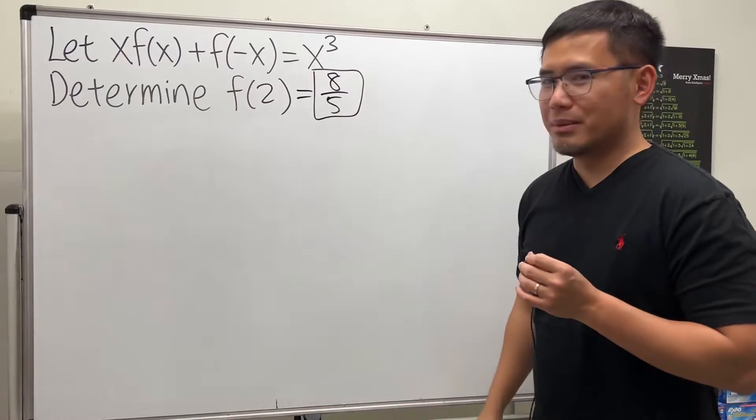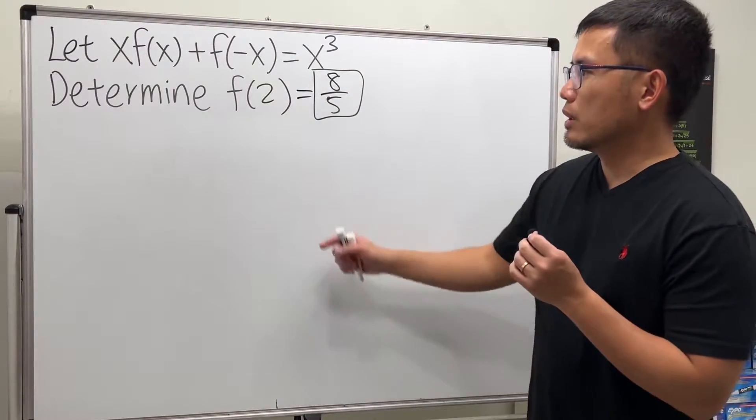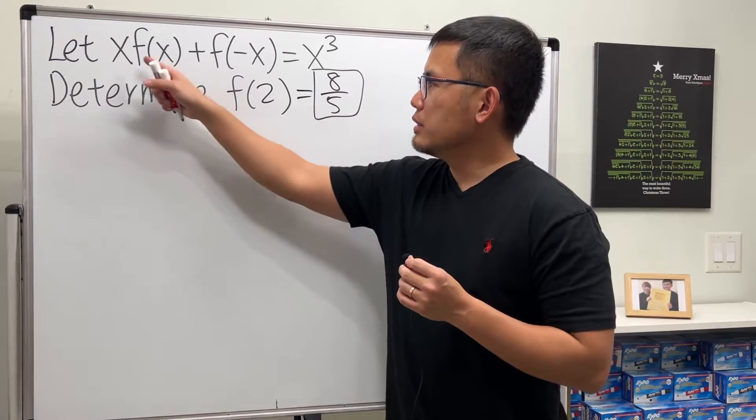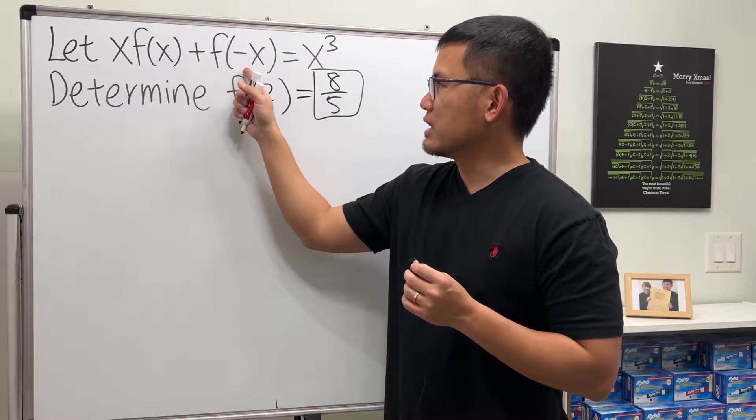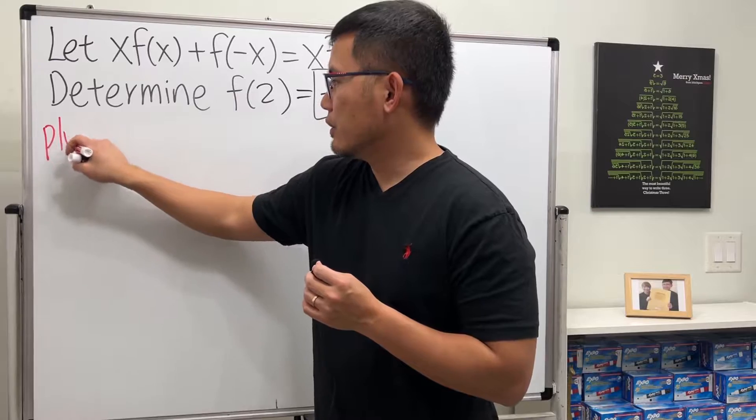If you got it right, leave a comment down below, but still watch the video though. All right, so how do we do it? We just want f(2), right? And you see here we have f(x), f(-x). You can plug in any x that you want.